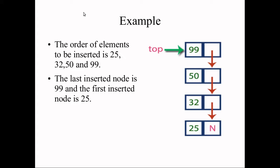This is a continuation of the last topic on stacks. In the last video, a stack was created with elements: 25 as the first element, then 19, 50, and 99 as the last element — which is called the top of the stack. The element 25 is first and has no previous element, so its address field will be null.